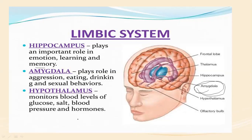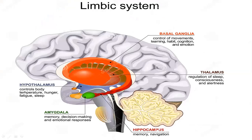The hypothalamus monitors blood glucose levels, salt, blood pressure, and hormones. It is the heat-regulating and fever-regulating center, and also regulates hunger. As per NCRT, the limbic system's key components are the amygdala, hippocampus, and hypothalamus, forming a ring of structures on the inner border of the cerebrum and floor of the diencephalon.